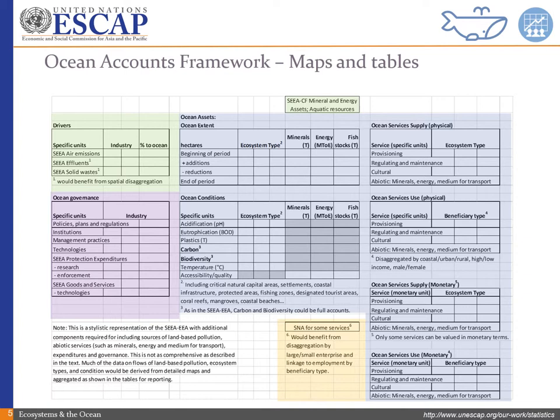The green here is from the SEEA central framework. We can use that to measure our drivers—the waste, the water emissions, air emissions. The blue here is from SEEA ecosystems: the ocean assets, biotic and abiotic, and their conditions, including how they are used. This is like land cover and land use for terrestrial ecosystems. We can also use this to track the ocean services, supply, and use in physical and monetary terms. The orange part here is from the System of National Accounts. We can use this to measure the value of the ocean economy, and as I said, there's much undercounting going on here.